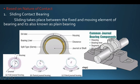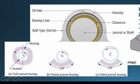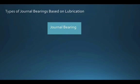Journal bearings are further classified into two categories based on the bearing housing. The first is full journal bearing, which provides 360-degree support all around the rotating shaft. The second is partial journal bearing, where the support is partial. The third kind is fitted journal bearing — the difference is that in a fitted journal bearing, the diameter of the shaft is bigger than the diameter of the bearing, whereas in the partial bearing, the shaft diameter is smaller than that of the bearing.